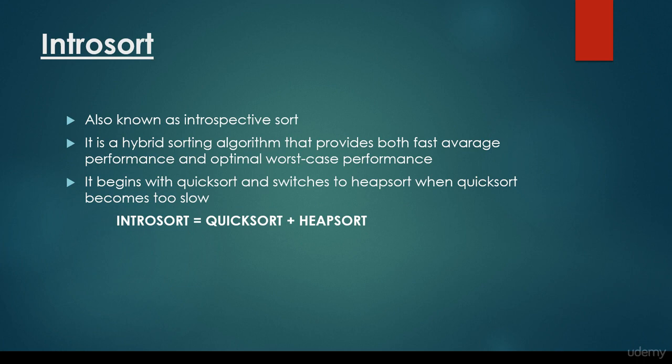It's also known as introspective sort. It is a hybrid sorting algorithm that provides both fast average performance and optimal worst case performance. It begins with quicksort and switches to heapsort when quicksort becomes too slow. So we get introsort if we combine quicksort with heapsort. This is why it is a hybrid algorithm, because we are combining two sorting algorithms, quicksort and heapsort.